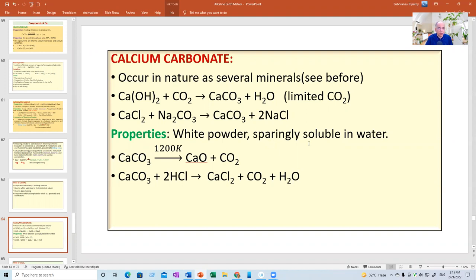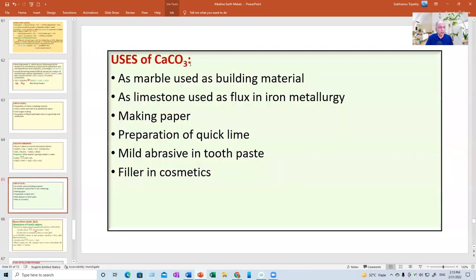Calcium carbonate is a white powder, sparingly soluble in water. On strong heating, you know what happens. And with acid, you know what happens. Calcium carbonate as marble, used as building material, as limestone, as flux in iron metallurgy, and many metallurgical processes, making paper, preparation of quick lime. It is a mild abrasive in toothpaste, and as a filler in cosmetics.